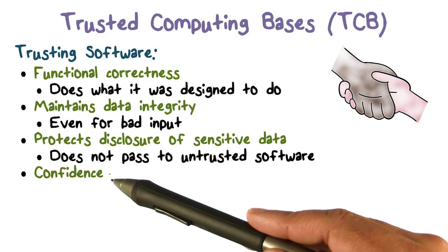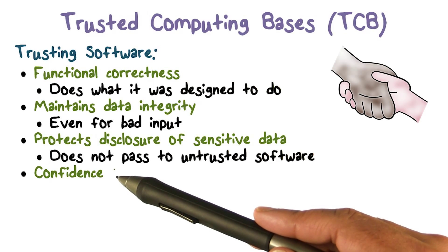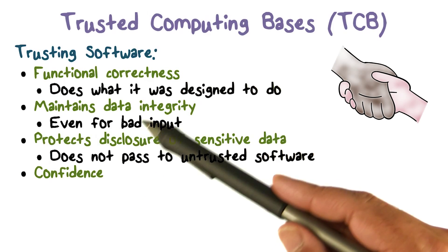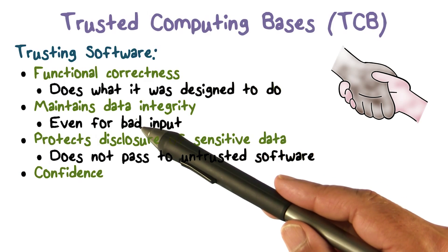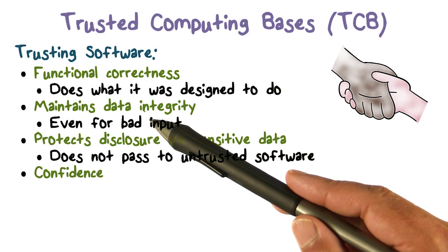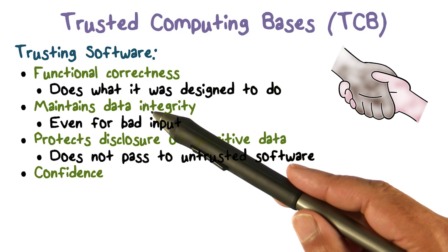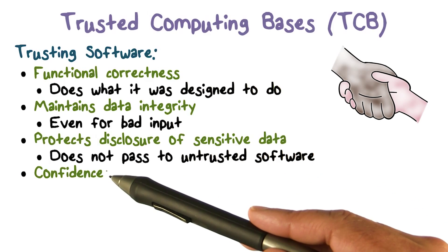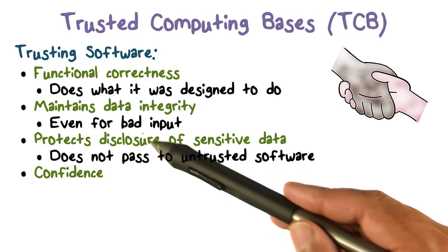Our confidence basically says how well does it do that. We can't demand a formal proof — that's going to be really hard. But as we said earlier, there could be things that increase our confidence in the system's ability to do all these things that we're talking about.